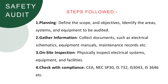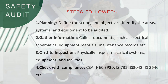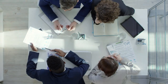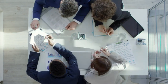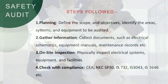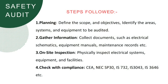Now coming to the steps involved in the electrical safety audit. The first and main step is planning. In this step, we define the scope of work — what all areas are to be checked, what all tests are to be done, what all equipments are to be audited, and what are the objectives of this audit.